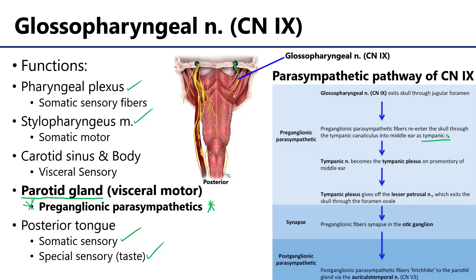The tympanic membrane divides the middle from the external ear. So tympanic canaliculus — little canal to the tympanic region — gives us a big hint as to where it's going in that middle ear. That tympanic nerve is then going to ramify into a bunch of branches spread out over an area of the middle ear called the promontory, as the tympanic plexus. That tympanic plexus will then coalesce within that middle ear space back to a single nerve that we call the lesser petrosal.